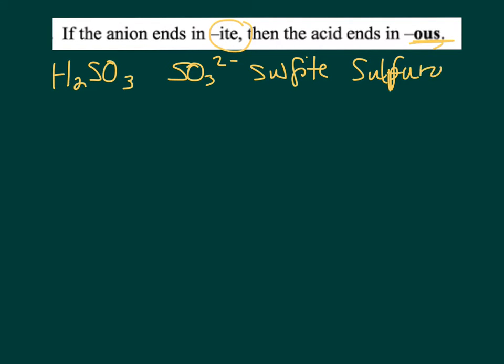If the anion ends in -ite, the acid ends in -ous. So for instance, if I have H2SO3, the anion is SO3 2-, and that is called sulfite. These are going to be all polyatomics, so this is called sulfurous acid.